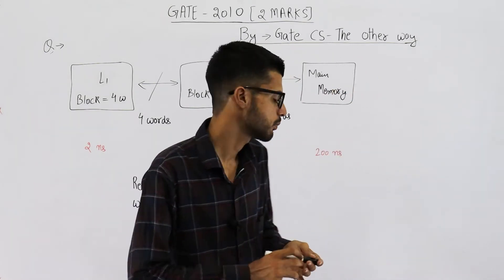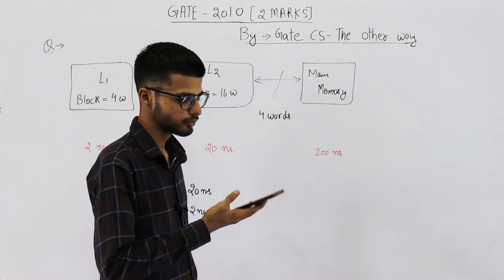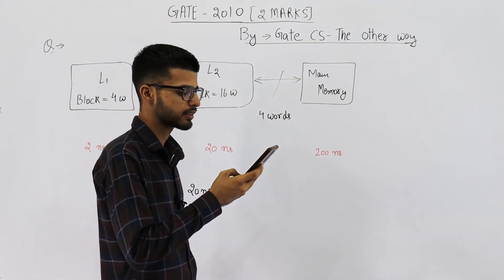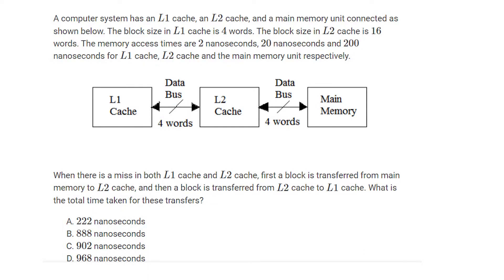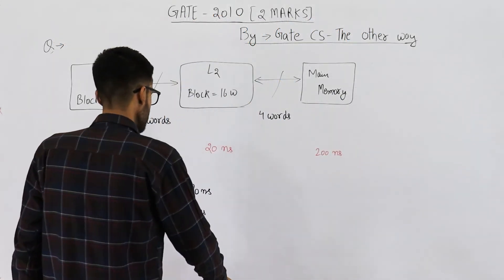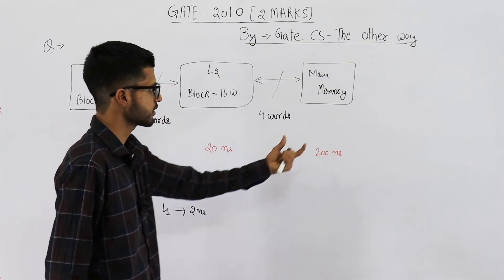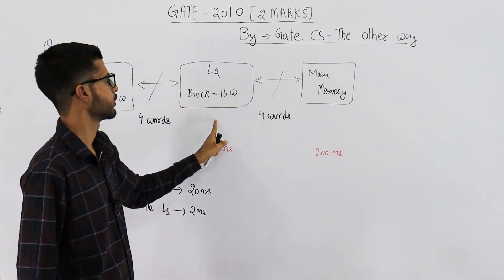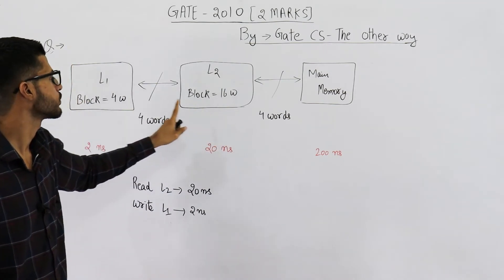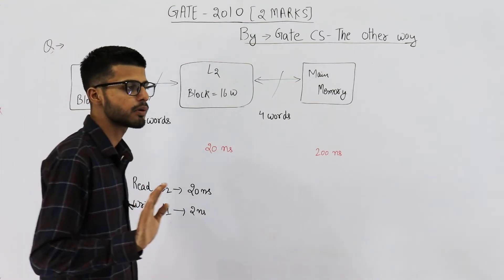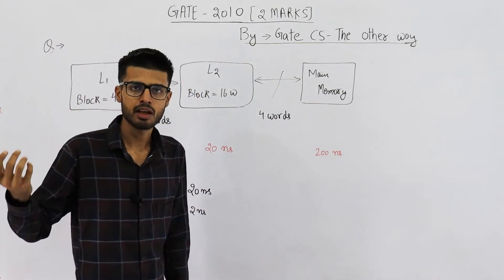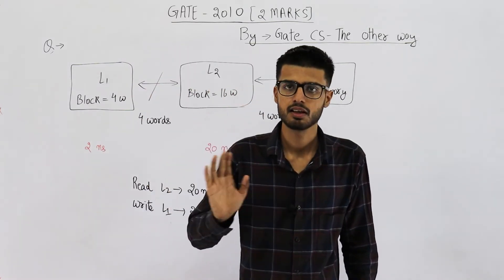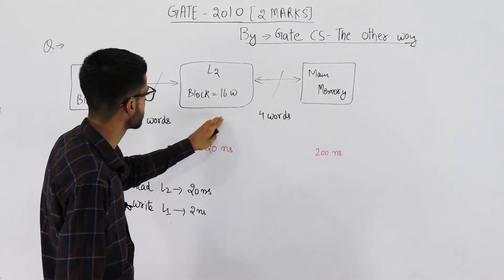Let me now read out the second part. It says: when there is a miss in both L1 and L2 cache, first a block is transferred from main memory to L2 cache, then a block is transferred from L2 cache to L1 cache. What is the total time taken for these transfers? They are just asking about this transfer plus this transfer — don't worry about hit rates, miss rates, or CPU access time.